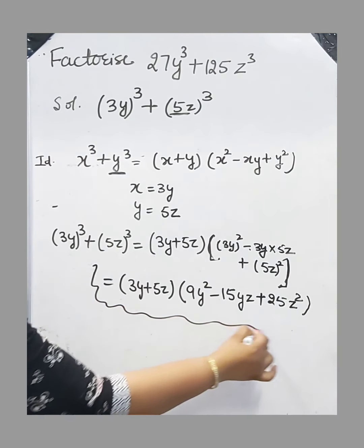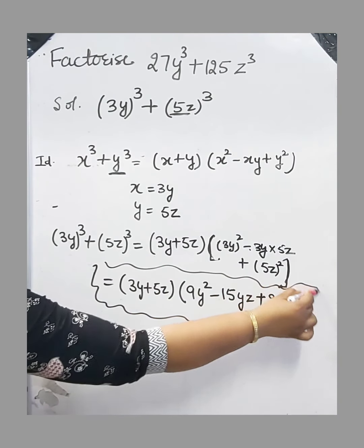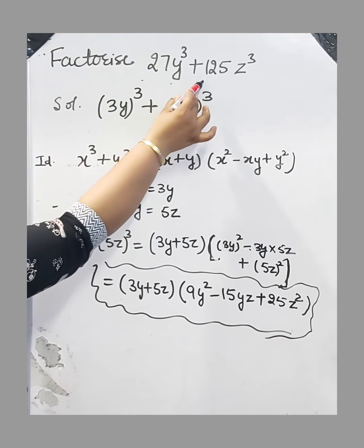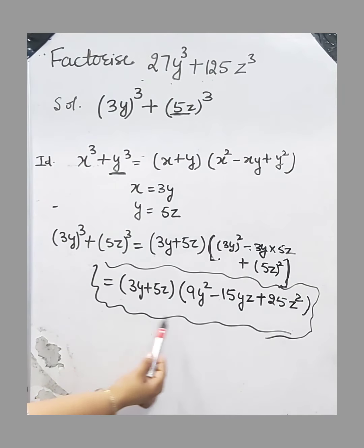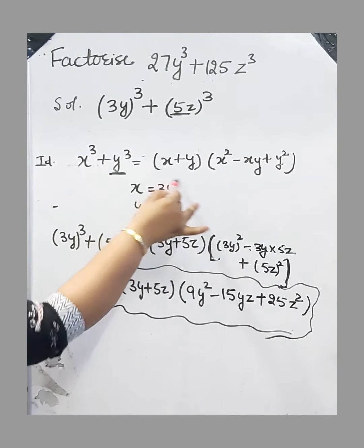Hence, this is the factorization of 27y³ + 125z³. No further simplification is required to factorize it if you are using this identity.